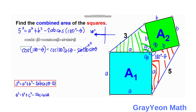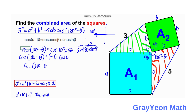Since sin(180°) = 0, that term drops out. And cos(180°) = −1, because 180° falls on the negative x-axis with no y-component. Therefore, cos(180° − θ) = −cos(θ).